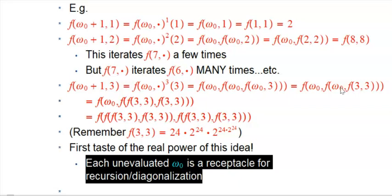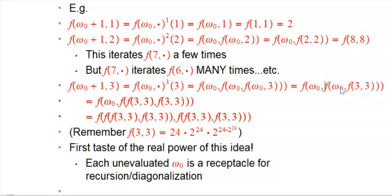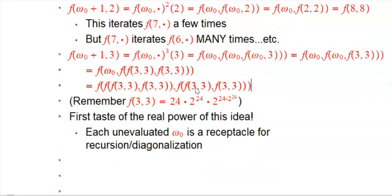Recursion, iteration, and diagonalization. In other words, each unevaluated ω₀ is a receptacle for this recursive diagonalization idea. This is lurking in wait as that outer one, and it's just waiting for these guys to be done evaluating and producing their own big number, and then it gets detonated. I think of it as like a bomb lying in wait—this f of ω₀ that's just a formal symbol is sitting there, and you don't necessarily know how powerfully this is going to activate. Well, it depends on exactly what the answer to this is, which depends on how powerfully this activates, which depends on the answer to this.